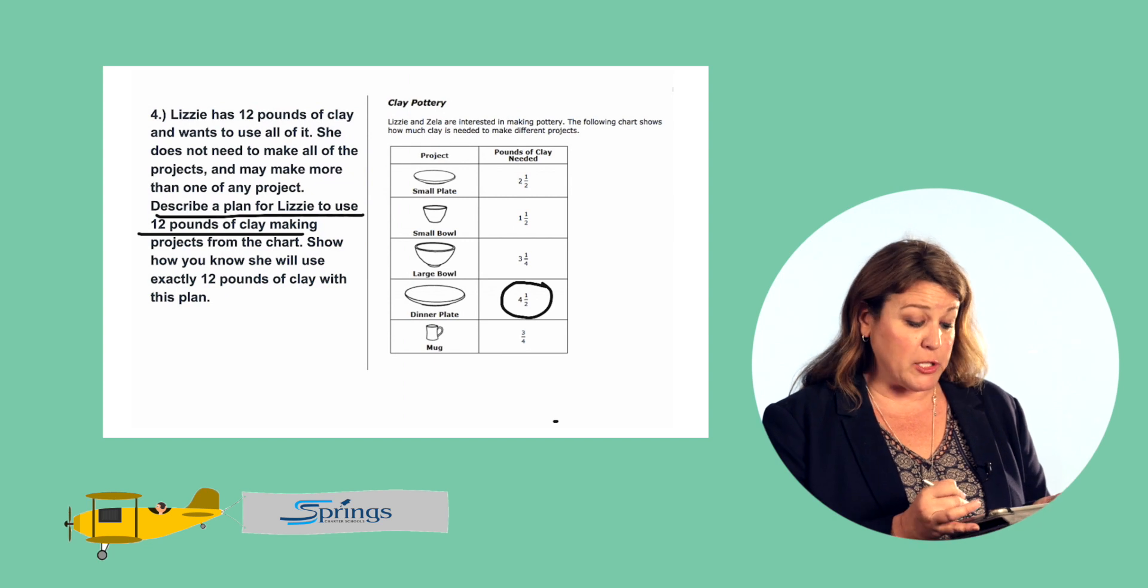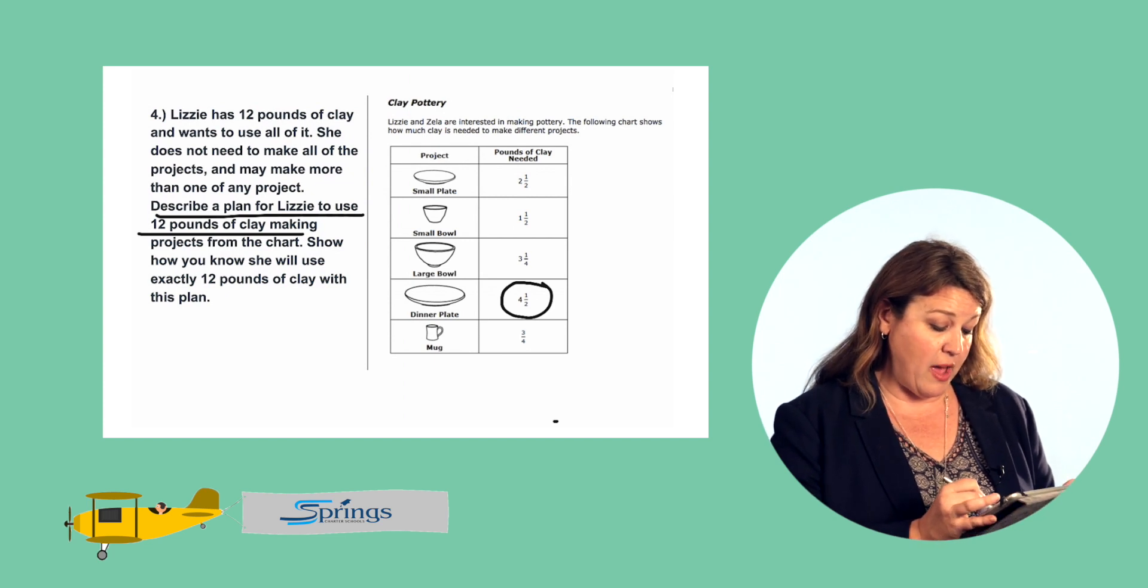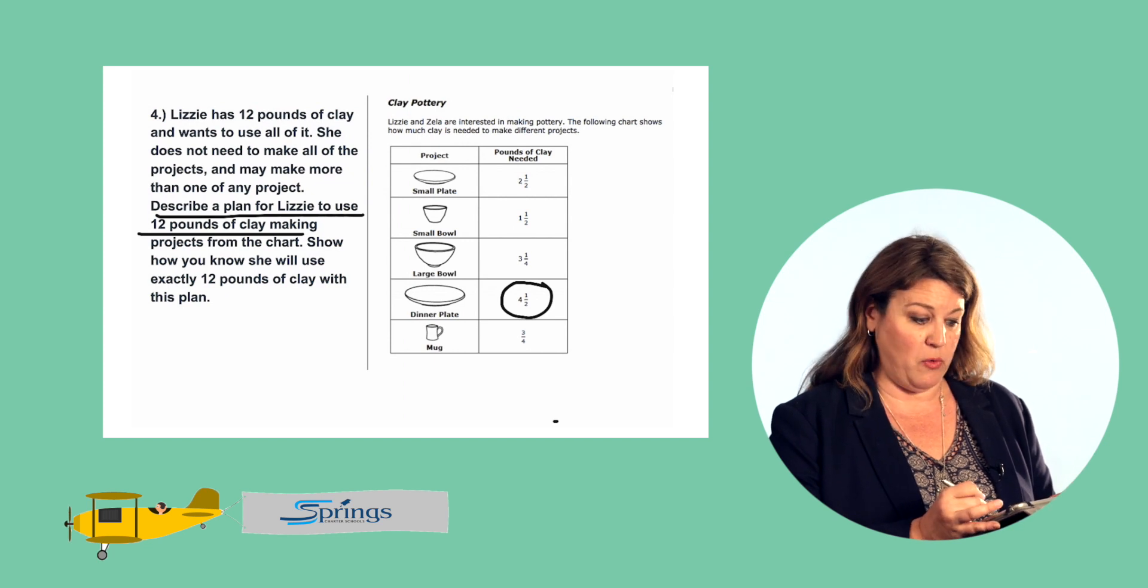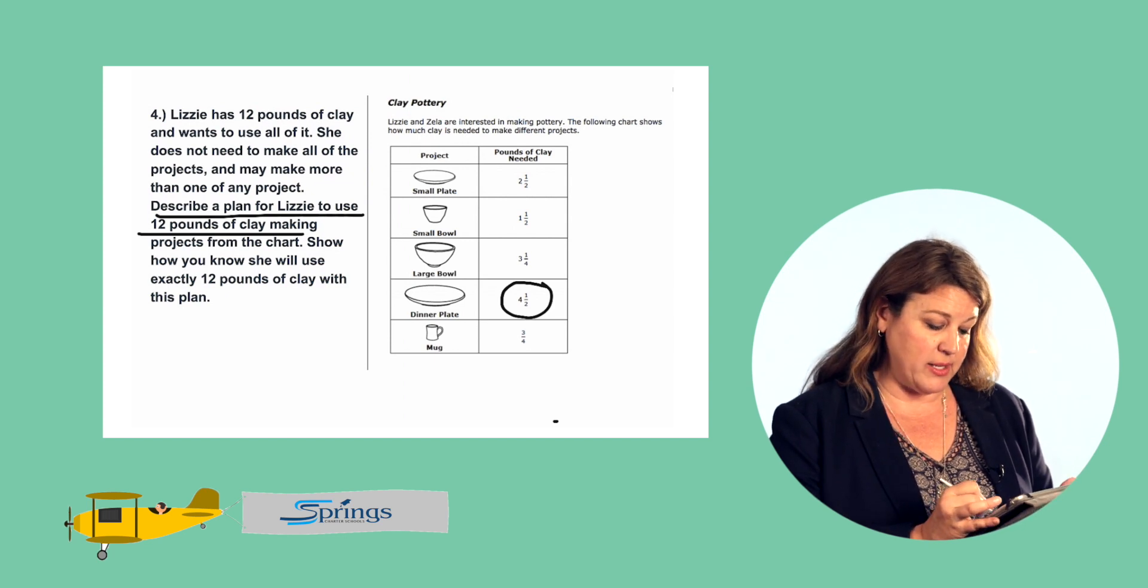So if she were to make two dinner plates, four and a half plus four and a half. The two halves is one. Four plus four is eight. Eight plus one is nine.